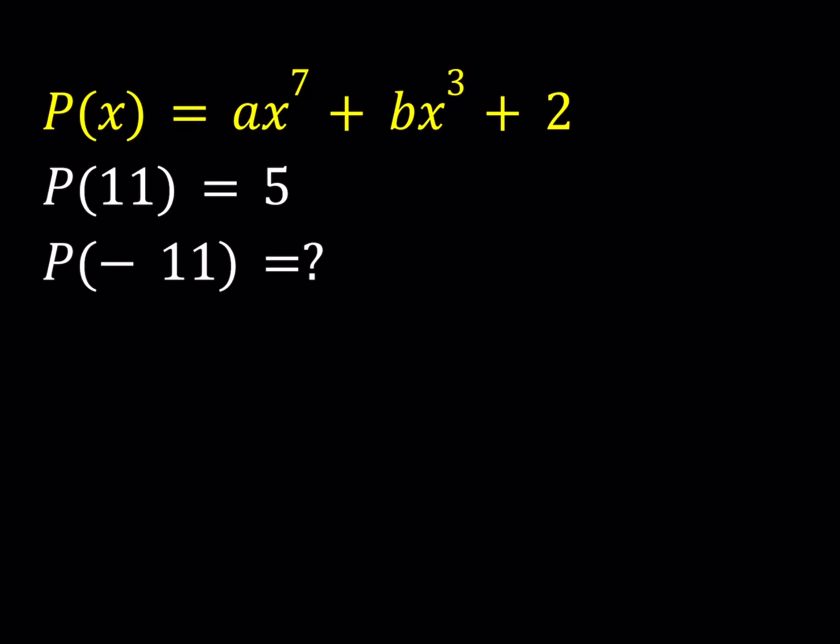Hello everyone. In this video we're going to be looking at a problem on polynomials. We have P of X equals AX to the 7th power plus BX to the 3rd power plus 2. So P of X is a polynomial. A and B are real coefficients and we are also given that P of 11 is equal to 5. And we are supposed to find P of negative 11.